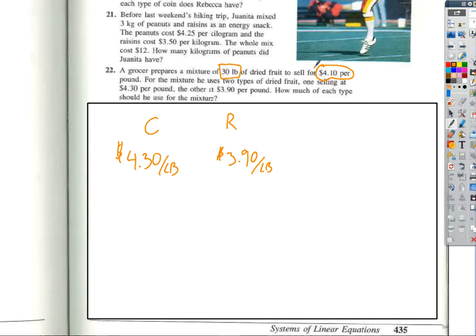how do I write that mathematically? C plus R. So I have C plus R, and that is going to equal how many? 4.10. No, 30. 30 pounds. So C, C in this case, is the number of pounds of cherries, and R is the number of pounds of raisins. Okay, so if I add the number of pounds of cherries plus the number of pounds of raisins, I will get 30 pounds. That's a lot of dried fruit.